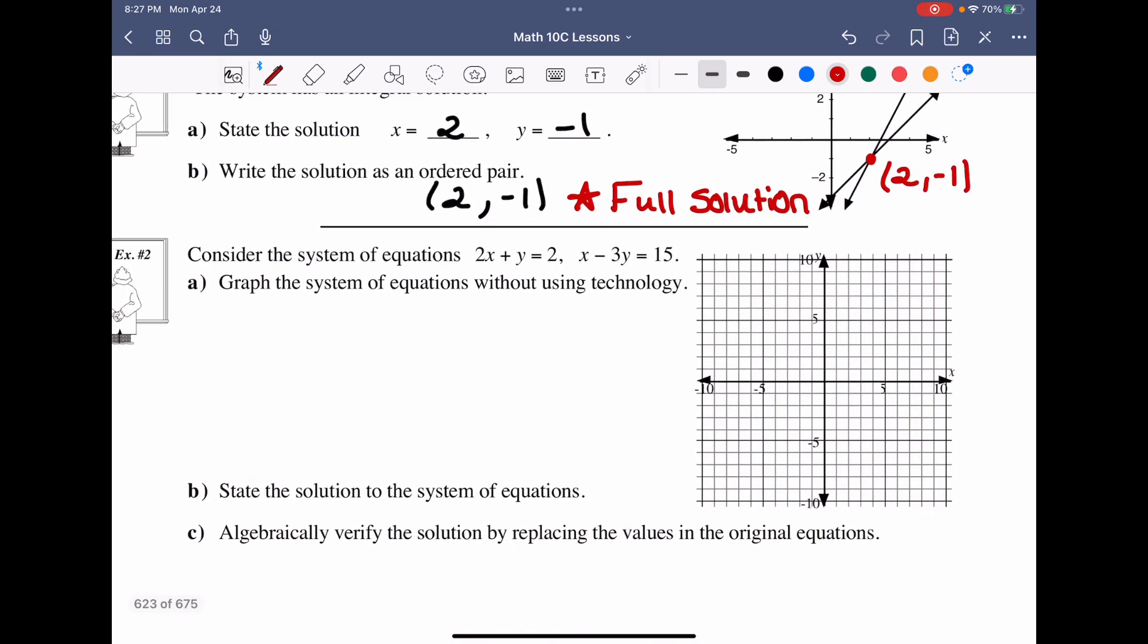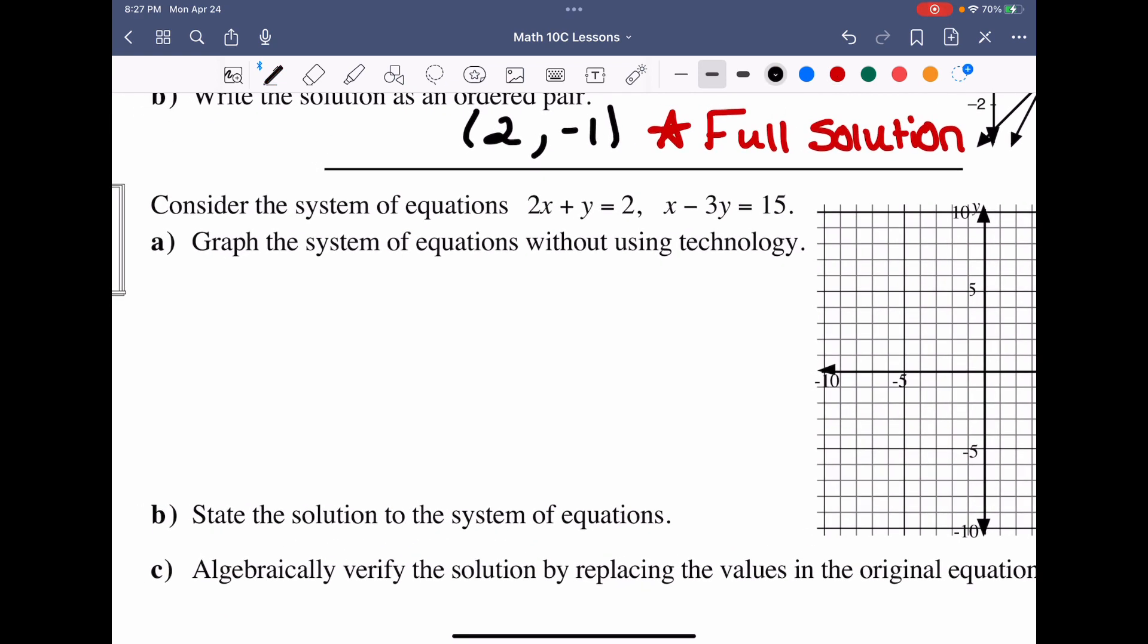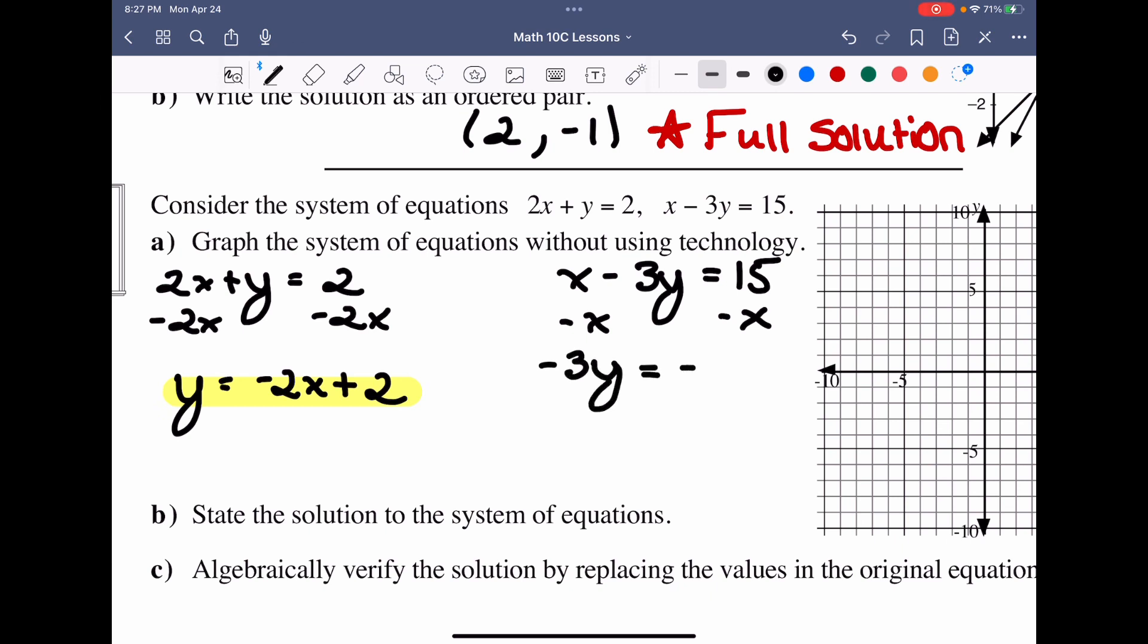Now, consider the system of equations below. Graph the system without using technology. Again, what we're going to have to do is convert these into y equals mx plus b, so I'm going to go 2x plus y is equal to 2, and my second equation is x minus 3y is equal to 15. I'm going to isolate for y on our first equation, meaning I'm going to subtract 2x from both sides, giving me y is equal to negative 2x plus 2. And then I'm going to go over to my other equation, isolate for y. To do this, I'm going to subtract away x. When I subtract away x, I get negative 3y is equal to negative x plus 15. I'm going to divide both sides by that negative 3 here. And when I divide both sides by negative 3, I get y is equal to x divided by 3, and then 15 divided by negative 3 is negative 5. There's my second equation.